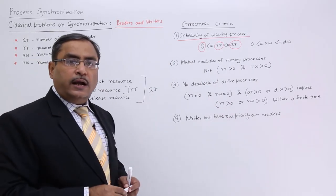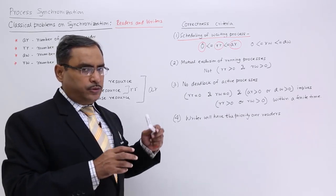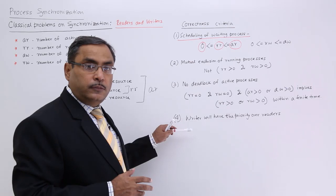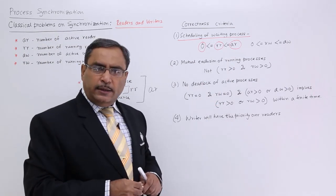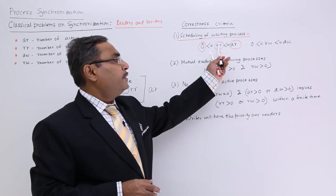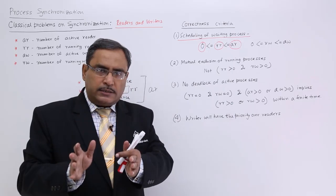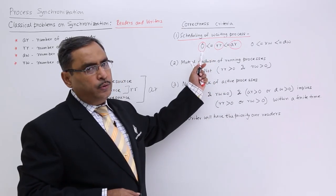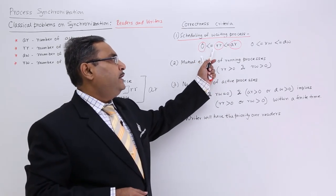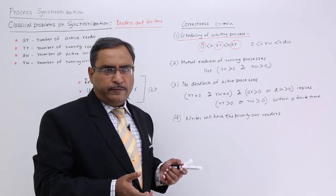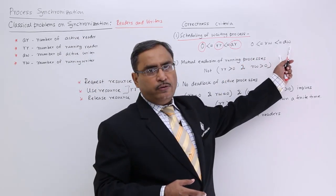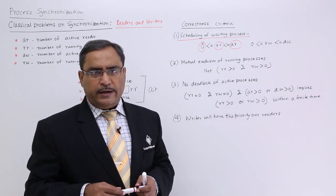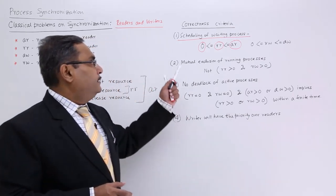The section is called Correctness Criteria. Point number one: the number of active readers must always be greater than or equal to the number of running readers. The count cannot be negative, so: 0 ≤ RR ≤ AR. Similarly, 0 ≤ RW ≤ AW, because some of the active writers are in the running state.